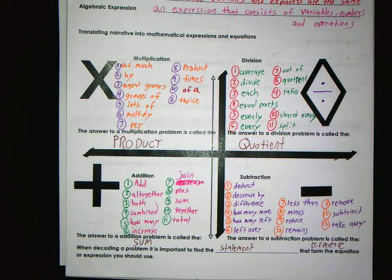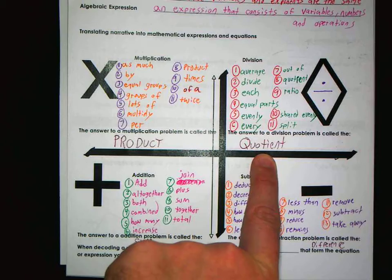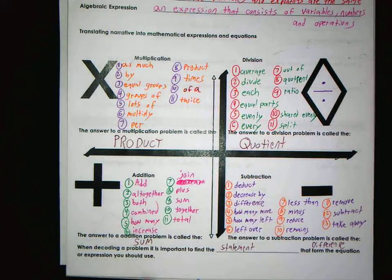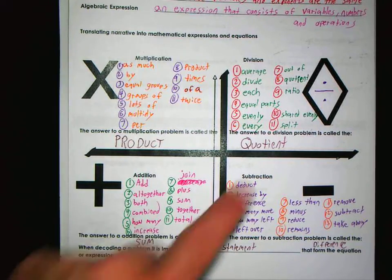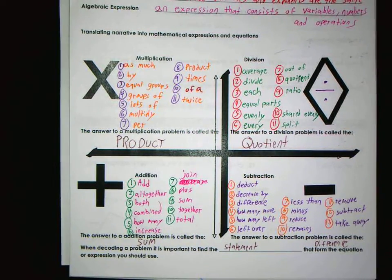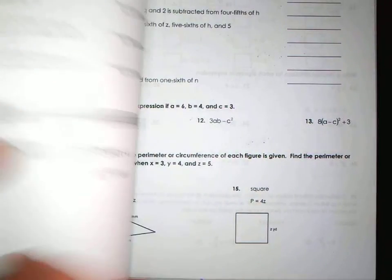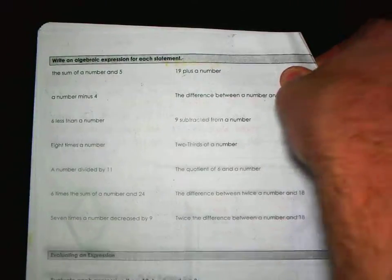Overall: we call multiplication the product, division the quotient — and quotient is the word people tend to forget means divide. Addition is the sum, subtraction is the difference. When decoding a problem, it's important to find the statement that forms the equation or expression you should use. Our two goals today are to convert expressions in words to algebraic expressions, and to be reminded how to evaluate expressions.